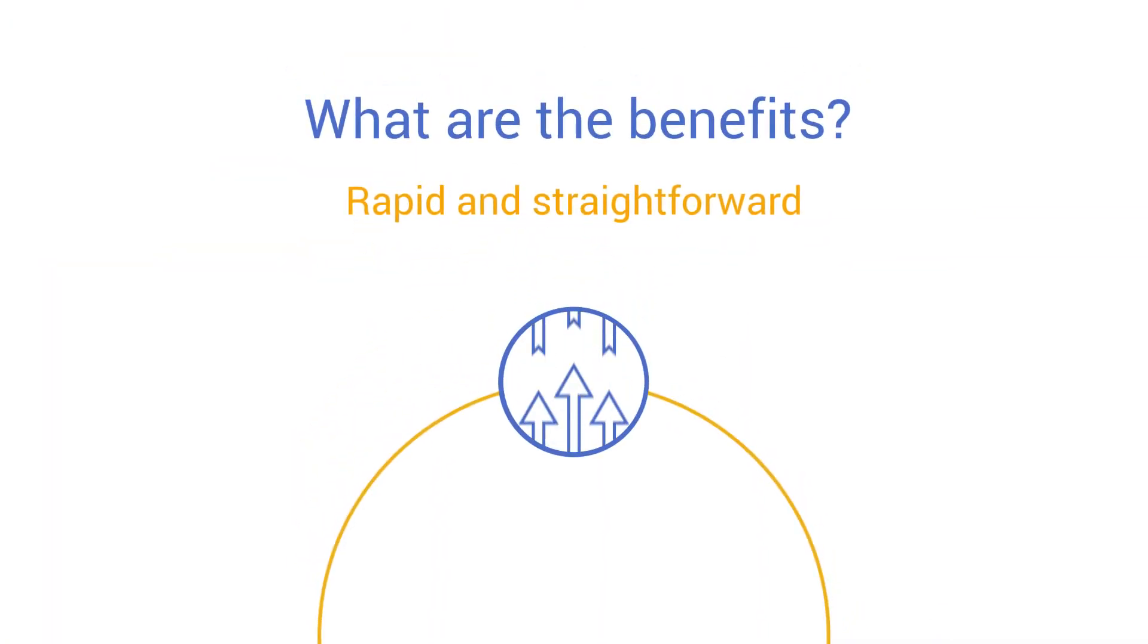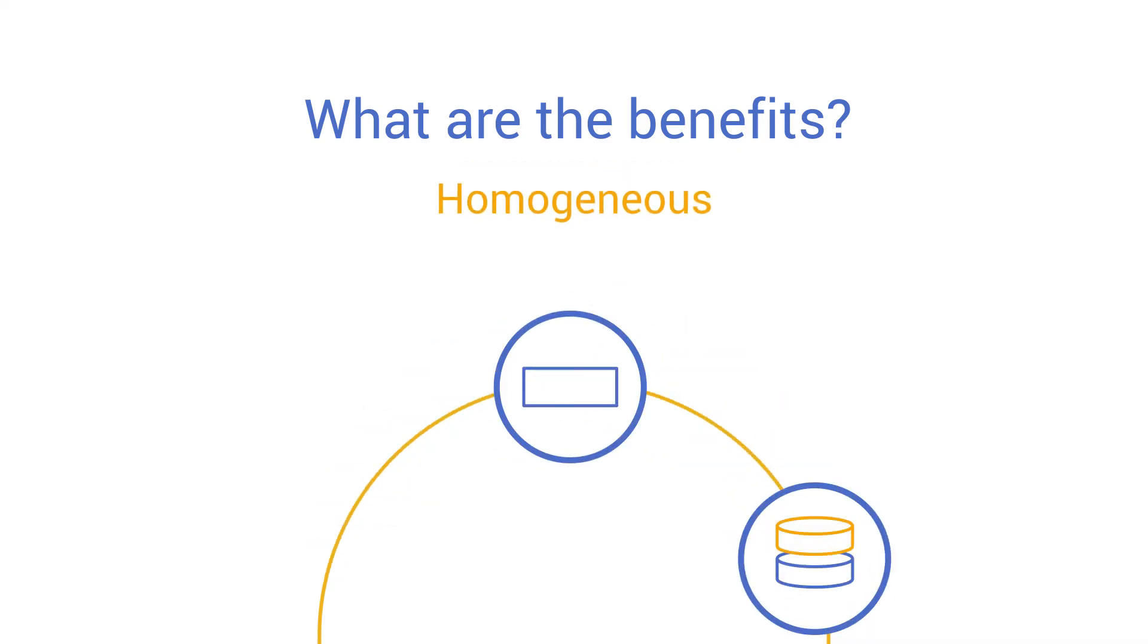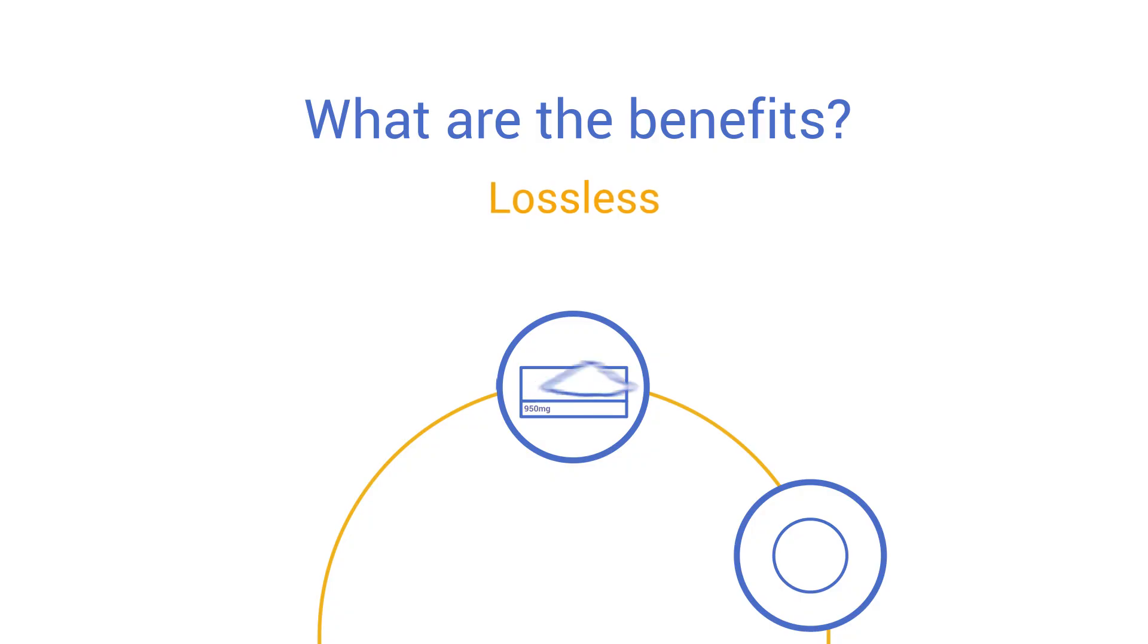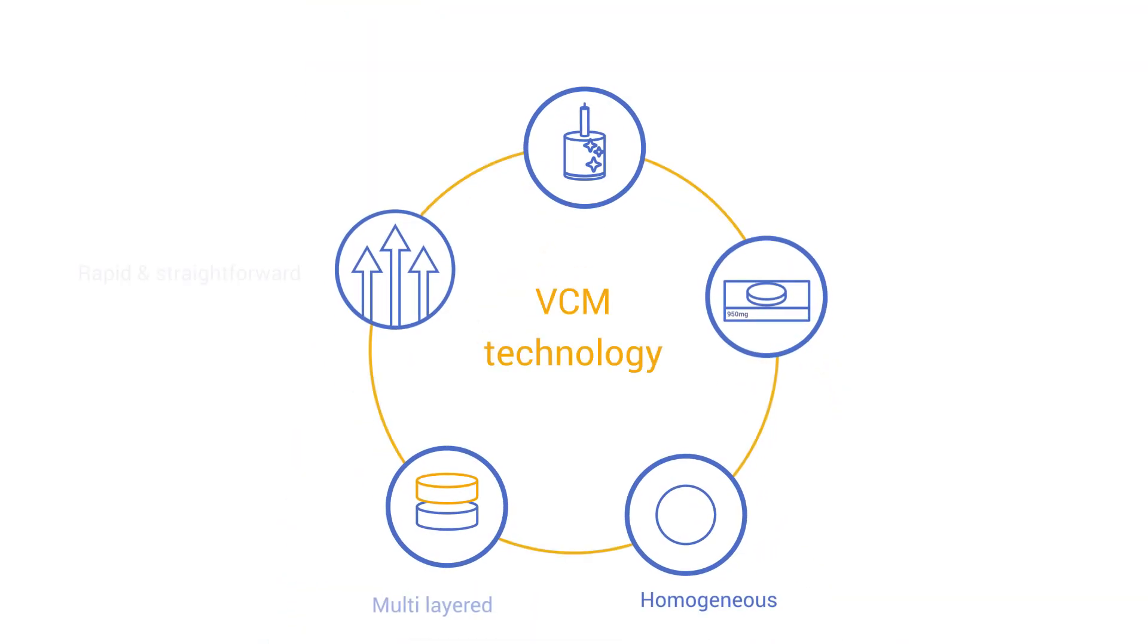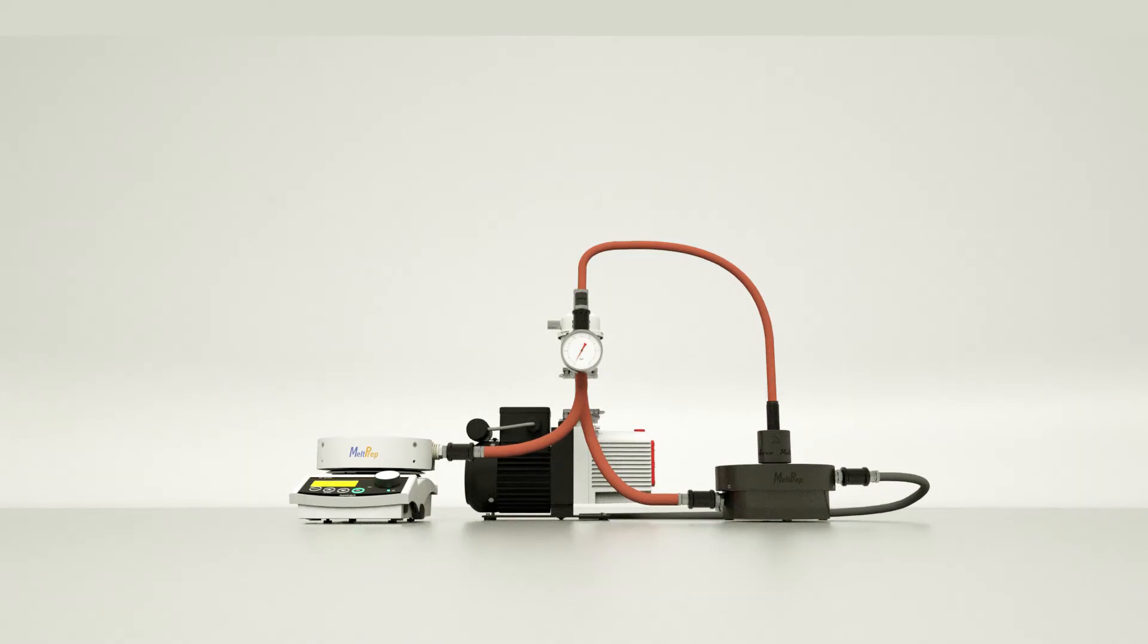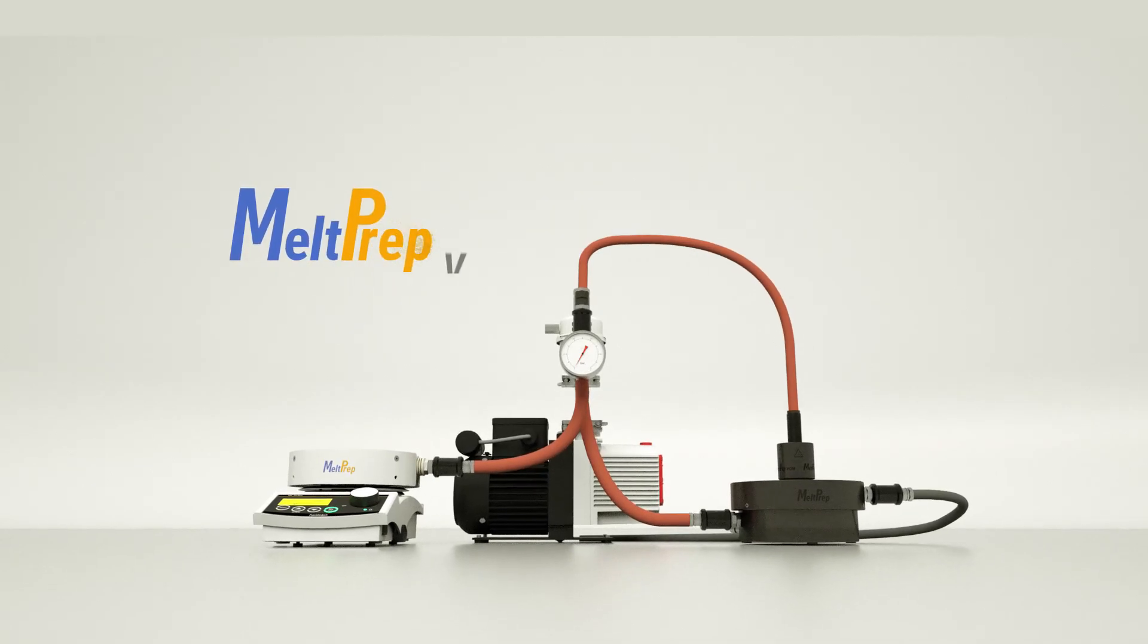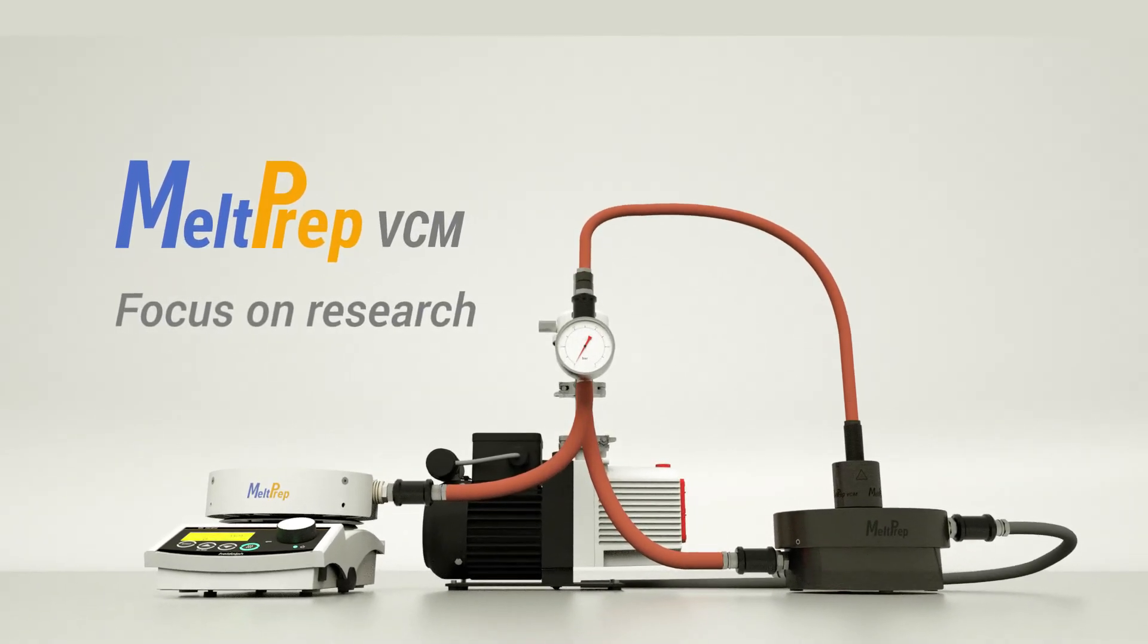Meltprep VCM is a rapid and straightforward system capable of producing multi-layered, homogenous samples through a totally lossless process. Save valuable development time by reducing cleaning to a minimum. VCM efficiently streamlines your daily routines, allowing you to focus on what matters most: research.